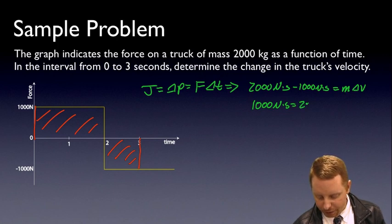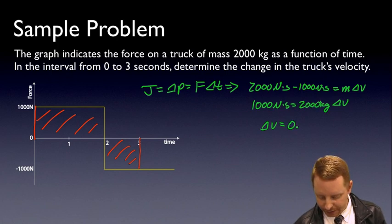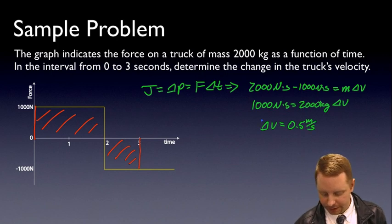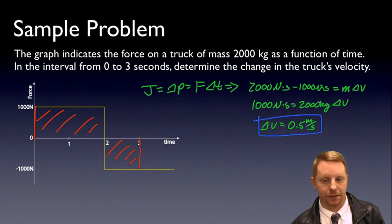Our M is 2,000 kilograms delta V. Therefore delta V, our change in velocity, is going to be 1,000 newton seconds over 2,000 kilograms, comes out to be 0.5 meters per second, using that force time graph to help us solve problems.